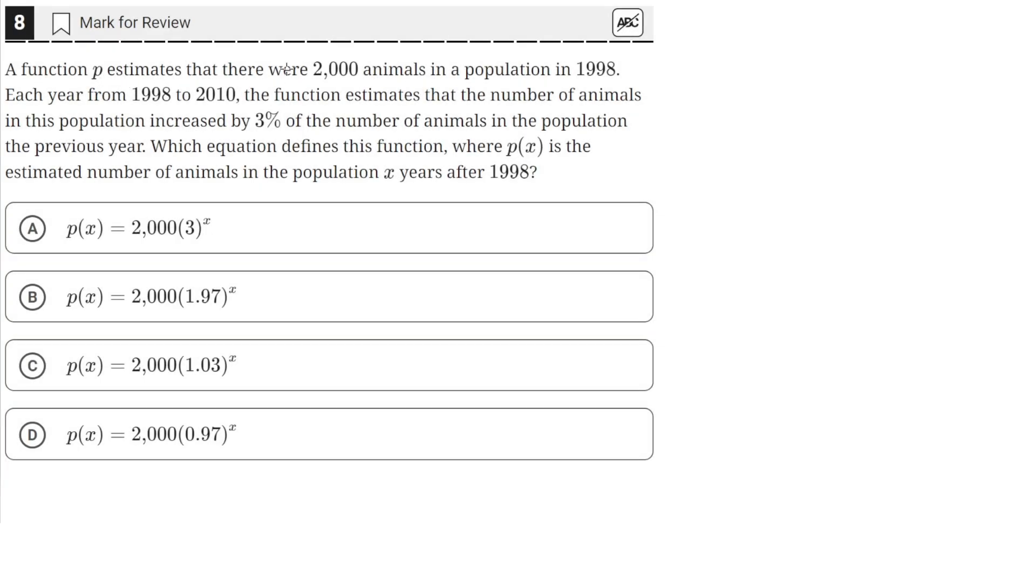A function p estimates that there were 2,000 animals in a population in 1998. From each year from 1998 to 2010, the function estimates that the number of animals in this population increased by 3% of the number of animals in the population the previous year. Which equation defines this function where p of x is the estimated number of animals in the population x years after 1998.